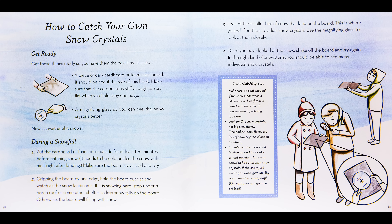Look at the smaller bits of snow that land on the board — this is where you will find the individual snow crystals. Use the magnifying glass to look at them closely. Once you have looked at the snow, shake off the board and try again. In the right kind of snowstorm, you should be able to see many individual snow crystals.